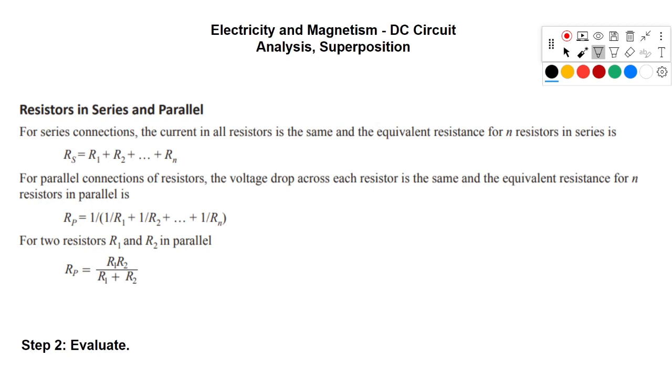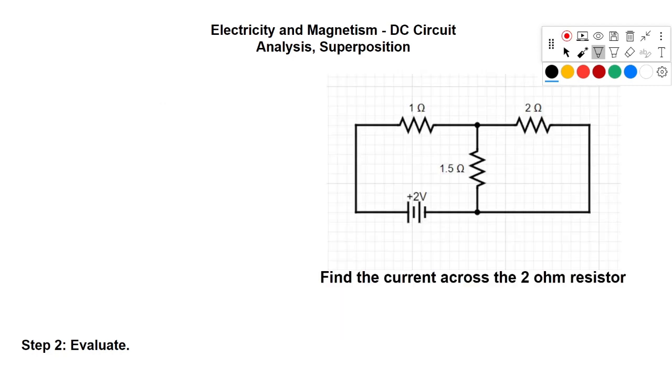Next we need to evaluate the circuit. To do so we can turn to our FE handbook. Here we have an excerpt of the handbook that gives you the rules in the electrical engineering section for resistors in series and parallel. For series connections, the current in all resistors is the same and the equivalent resistance is the sum. For parallel resistors, the voltage drop across each resistor is the same, and we can calculate the total resistance using either one of these two equations.